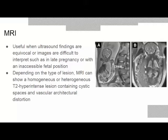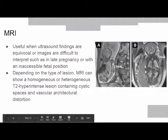MRI is useful when ultrasound findings are equivocal or images are difficult to interpret, such as in late pregnancy or with an inaccessible fetal position. Depending on the lesion type, MRI can show a homogeneous or heterogeneous T2 hyperintense lesion containing cystic spaces and vascular architectural distortion. A picture of MRI from the index case is shown, both before and after fetal thoracocentesis.